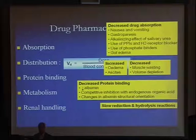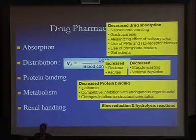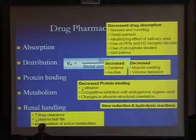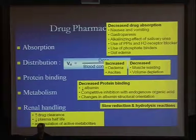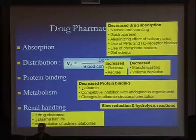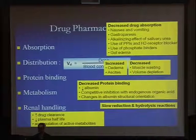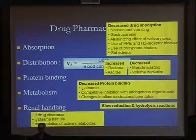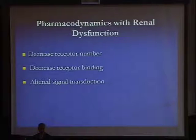Metabolism is going to be slow, with also a reduction in hydrolysis reactions. And finally, the renal handling: there is going to be a reduction in drug clearance and an increase in plasma half-life. The result will be accumulation of active metabolites of the drugs. So this is what happens with renal impairment in the case of pharmacokinetics.